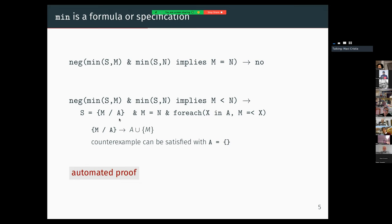SetLog returns a counterexample. In this case, it says that a possible counterexample is S being the set with element M and a remainder, another set. This set constructor is interpreted as the union, as much as in the previous talk. We have more constraints: M should be equal to N, and this foreach must hold. This counterexample can be easily satisfied by substituting A by the empty set. In this case, we have S equal to M, and this foreach is trivially satisfied because this turns to be the empty set. This all is to say that SetLog can perform automated proofs.